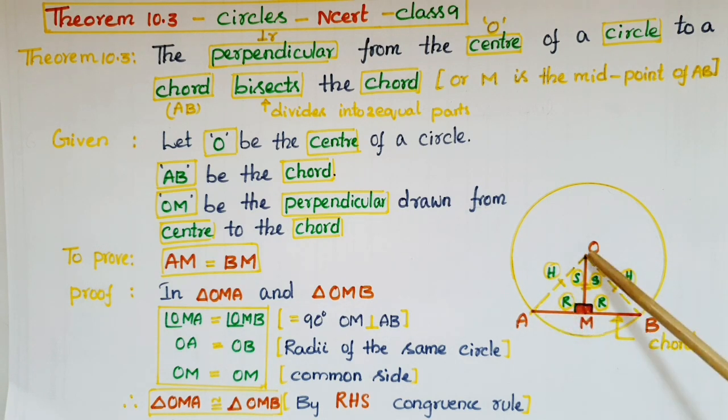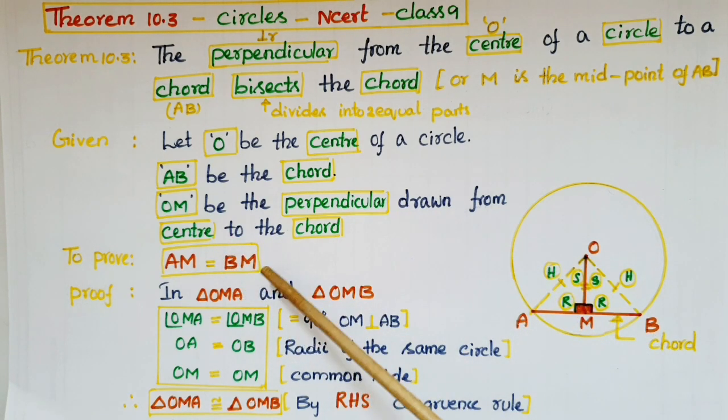Then we have to show that this line bisects this chord. So that means we have to show that AM is equal to BM. It divides this chord into two equal parts.